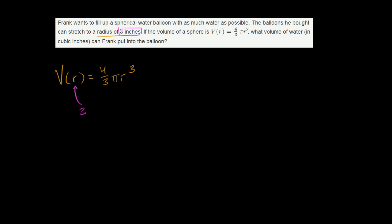V of 3 is equal to 4/3 π, instead of r cubed, I would write 3 cubed. 4/3 π times 3³. This is how the function definition works.